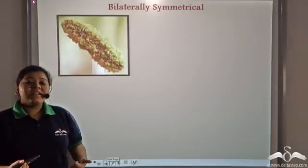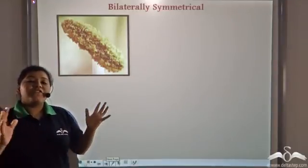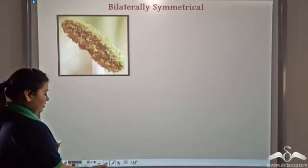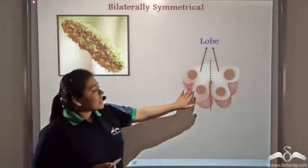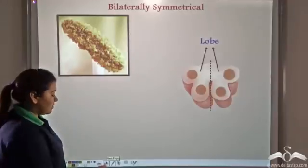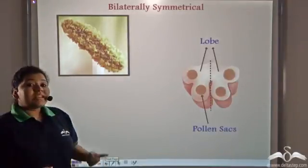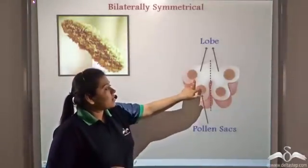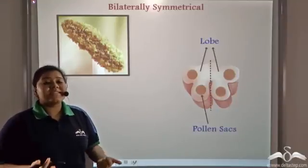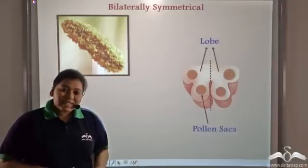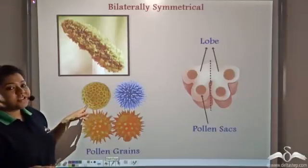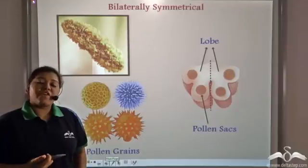An anther is not only bilaterally symmetrical from the outside, it is also similar from the inside. These equal halves are known as lobes. Each lobe has two pollen sacs, so in total there are four pollen sacs. These pollen sacs contain pollen grains — these spherical structures which are very critical for reproduction.